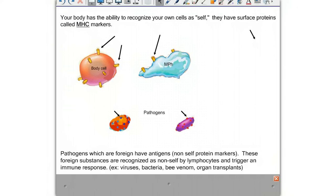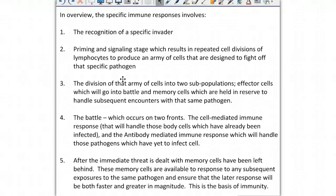To preview what we're going to be studying, let's take a look at the overview of how the specific immune responses work. It starts with the recognition of a specific invader, followed by a priming and signaling stage, which results in repeated cell divisions of lymphocytes to produce an army of cells that are designed to fight off that specific pathogen.